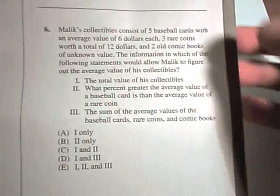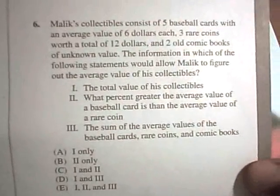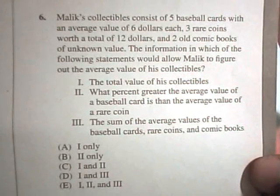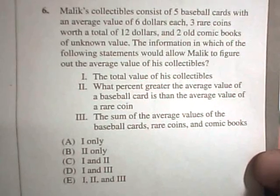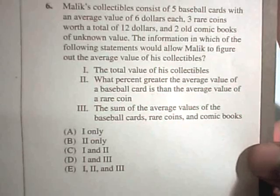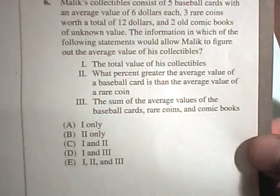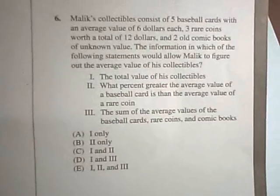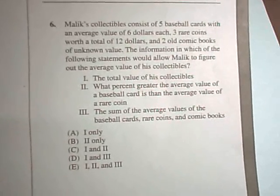Okay, I think 6 again is one you can kind of talk out. So, it says his collectibles consist of 5 baseball cards with an average value of $6 each, 3 rare coins worth a total of $12, and 2 old comic books of unknown value. It says the information in which of the following statements would allow this guy to figure out the average value of his collectibles. So, one, it says the total value of his collectibles. Would that be enough to know? Answer two is what percent greater the average value of a baseball card is than the average value of a rare coin? And three says the sum of the average value of the baseball cards, rare coins, and comic books. Well, I think it looks like one should be enough. If we know the total value of his collectibles, then we could just divide by the number of his collectibles, and that would give us the average value.